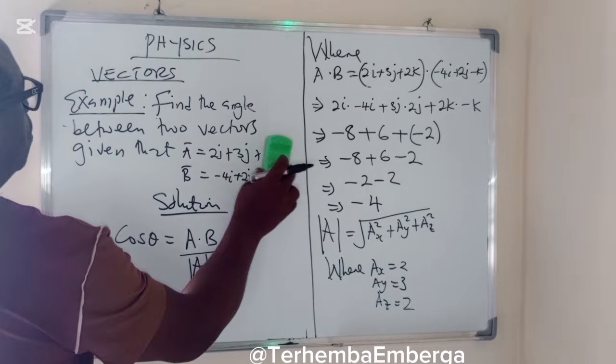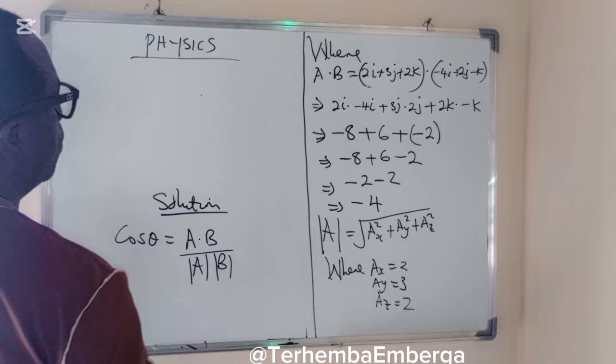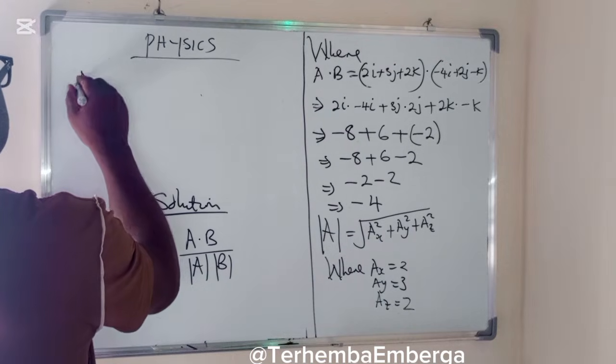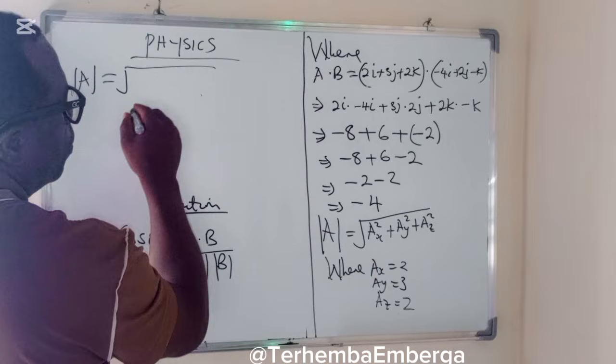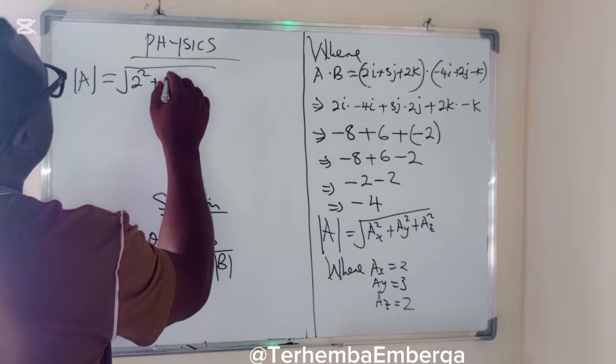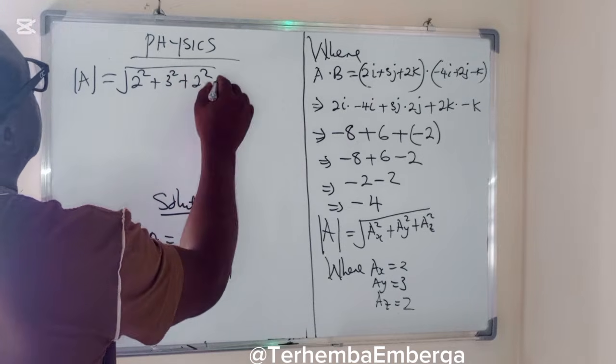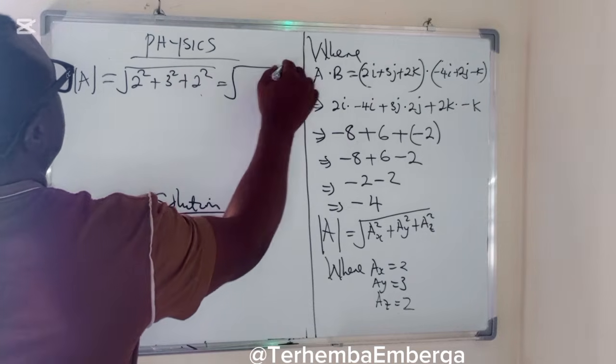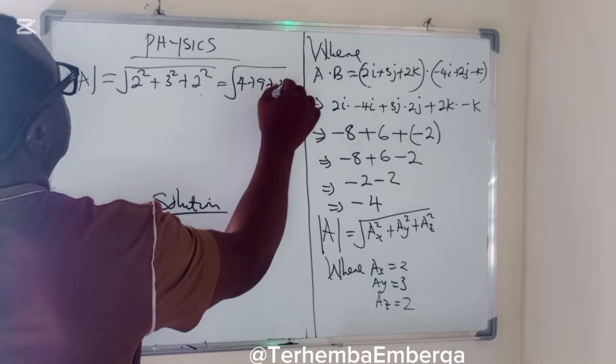So by the time we substitute that, we have modulus of A equals square root of 2 squared plus 3 squared plus 2 squared, which is equal to the square root of 4 plus 9 plus 4.